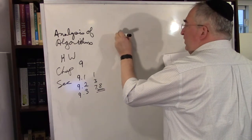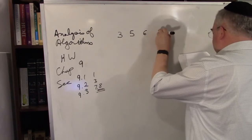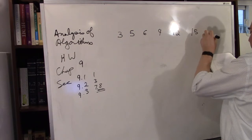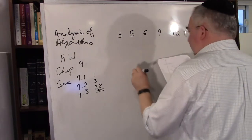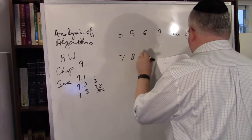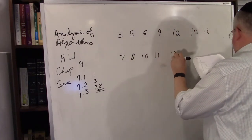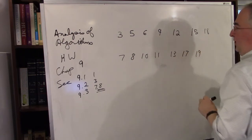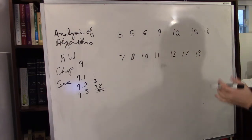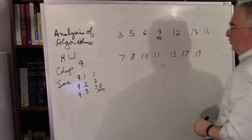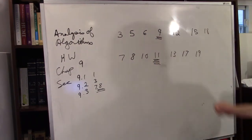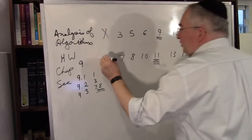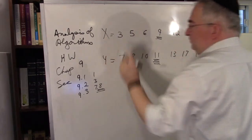Let's say I have an array: 3, 5, 6, 9, 12, 15, 18. And I have another array: 7, 8, 10, 11, 13, 17, 19. Now these are sorted. We're going to look at the middle elements of each one. So this is the median of this array — we'll call it x. This is the median of this array — we'll call it y.